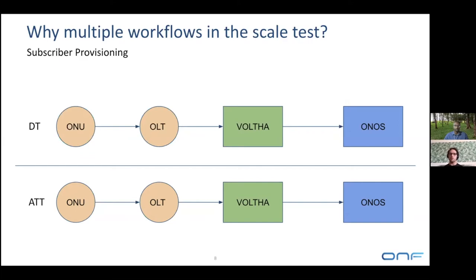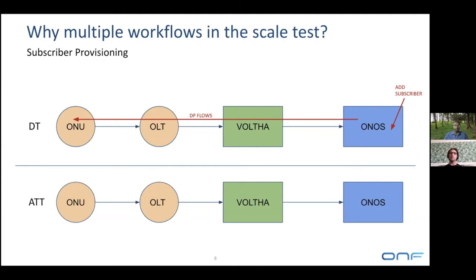When we start to actually provision a subscriber — meaning instructing ONOS to create a real packet connection between the ONU device and whatever upstream device is north of the OLT — that happens with what we generally refer to as the 'add subscriber' call into ONOS. When ONOS receives this call, it fetches information from a user database and, based on that, provisions the data plane flows. These flows contain information for the various devices on how to tag and untag traffic so it can be differentiated for each subscriber.